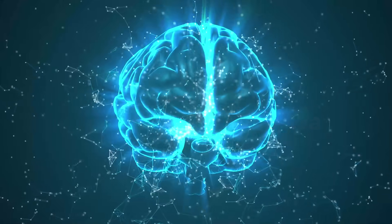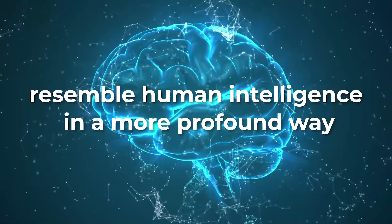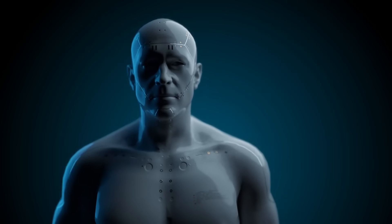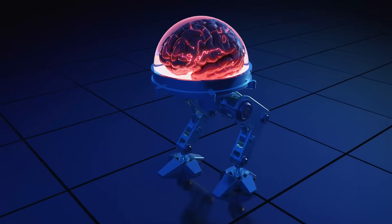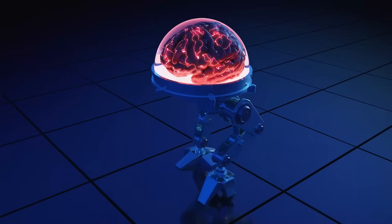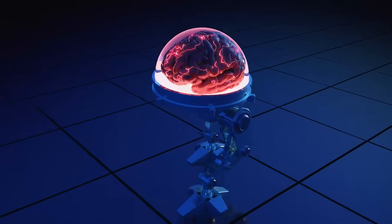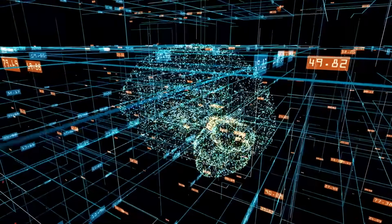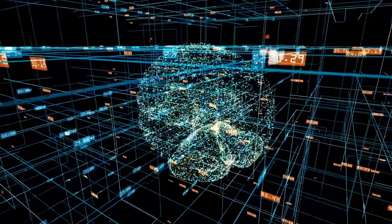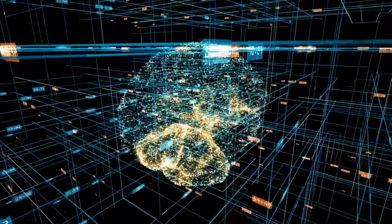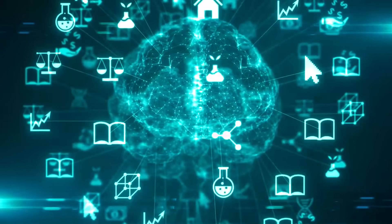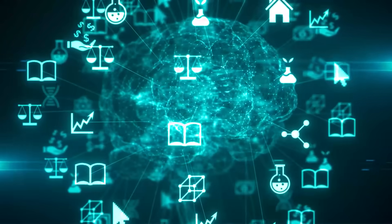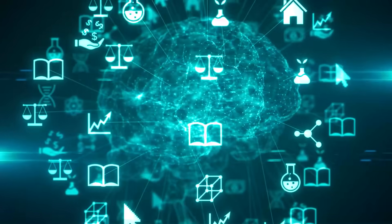At this stage, AI starts to resemble human intelligence in a more profound way, but it's still not equivalent to a human mind — it's more like a highly advanced tool specialized in reasoning and thinking tasks. As fascinating as these AI systems are, we're still only at the halfway point. The upcoming stages venture into the realm of science fiction, with AI matching and even surpassing human intelligence.